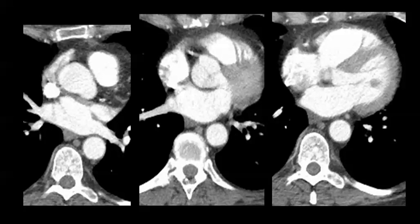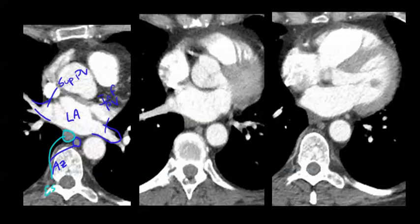The final set of slices is way down at the bottom. Remember this was the subcarinal. Going lower, you start seeing right here your left atrium, and this right here is your inferior pulmonary vein, and here is the superior pulmonary vein. Right back here you have your esophagus, and of course you have your descending aorta right here.